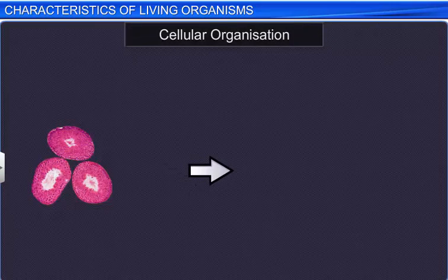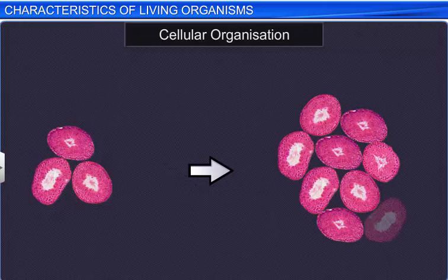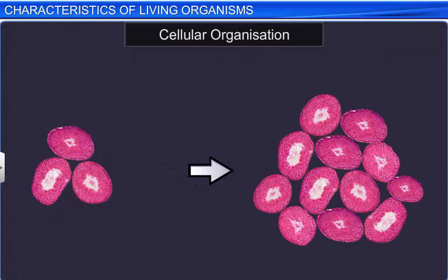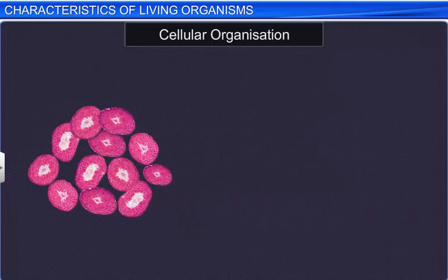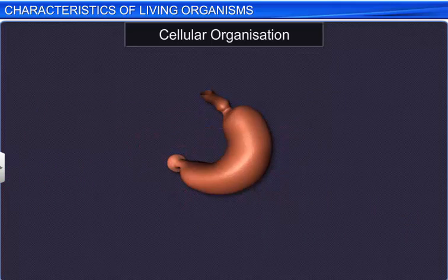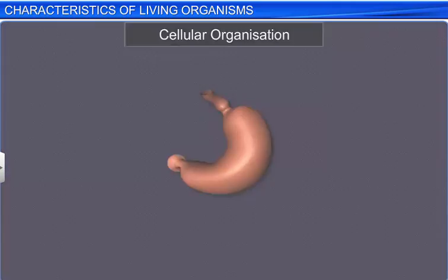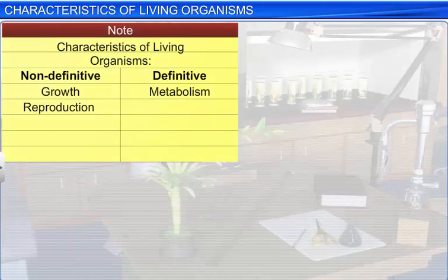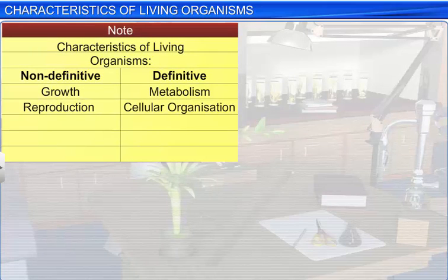Cellular organization is another important characteristic of living organisms. Such organization is not observed in the non-living. And hence, cellular organization is also a definitive feature in all life forms.